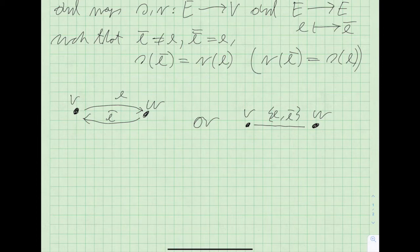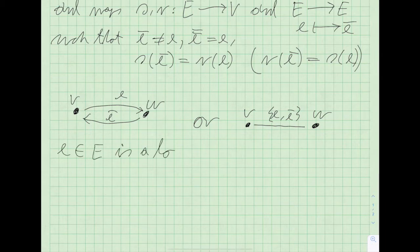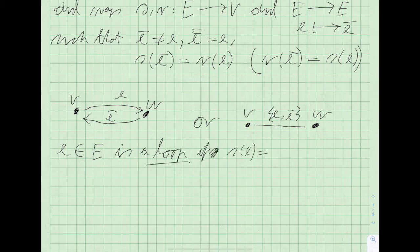Now, some graph-theoretic notions. An edge E is a loop if it starts and ends in the same place — namely, if the source of E equals the range of E.